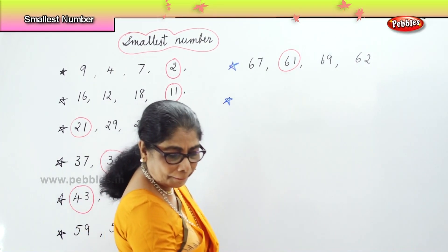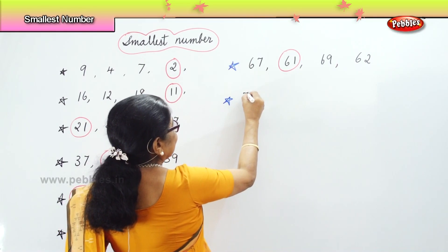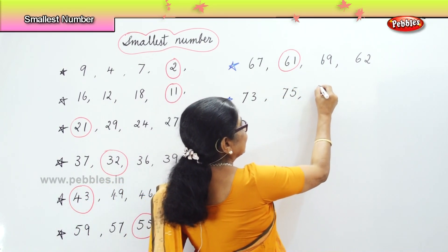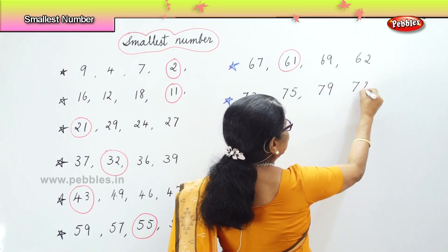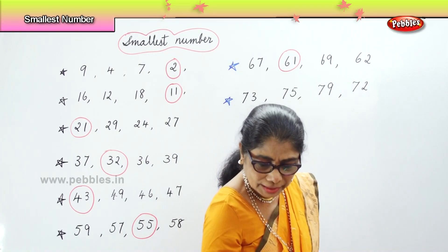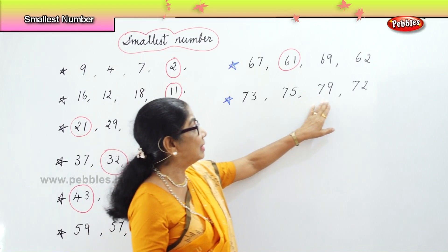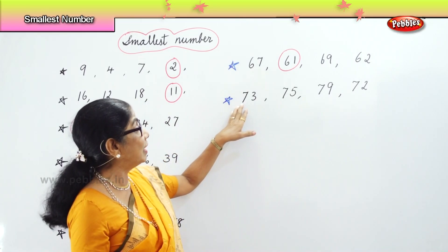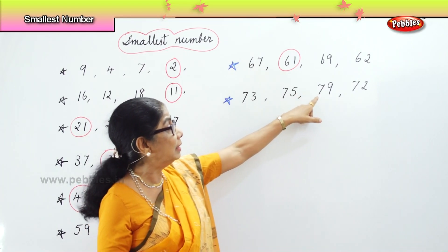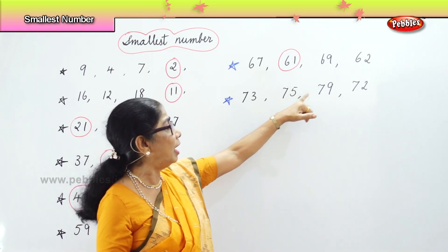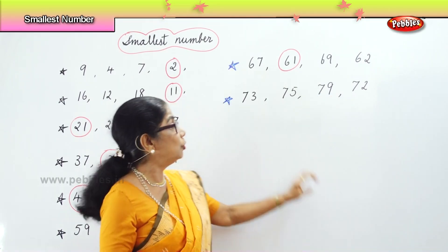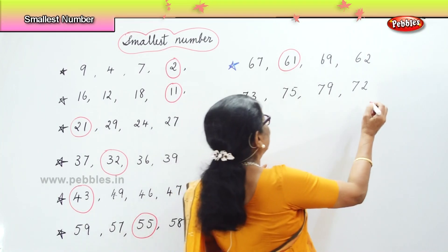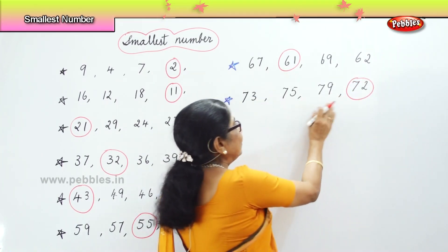Next, we do another set of numbers in 70s. 73, 75, 79, and 72. All in 70s. Let's look at the second number of each: 73 has 3, 75 has 5, 79 has 9, and 72 has 2. You have 3, 5, 9, and 2. So which is the smallest? 2. 72 is the smallest among 73, 75, and 79.